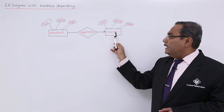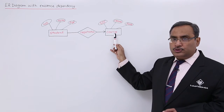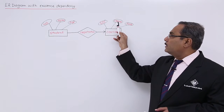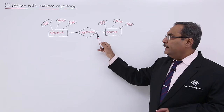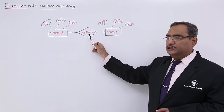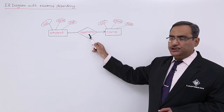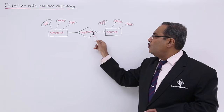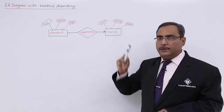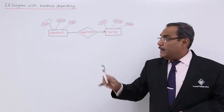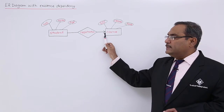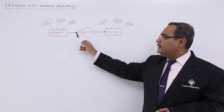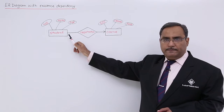Another entity called course with three attributes: course number, course name, and fees. And there is one relationship called registration which is having the roll number and the course number. This arrow is indicating that this is one and this is many.